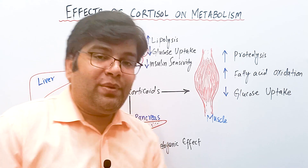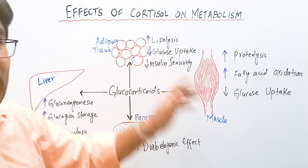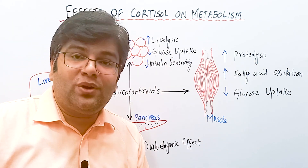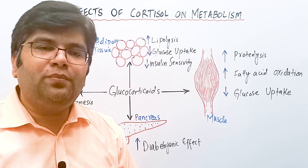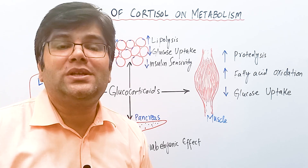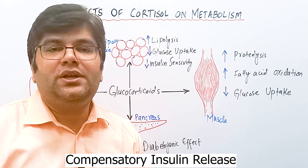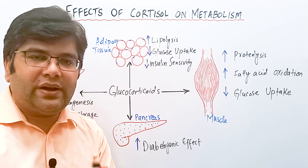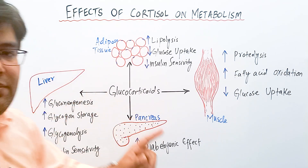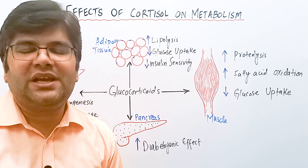When hyperglycemia occurs due to gluconeogenesis and decreased peripheral glucose uptake, this increases the release of insulin — just like glucagon does. Both cortisol and glucagon can increase insulin release because they cause hyperglycemia, and this is called compensatory insulin release. The extra glucose is then converted into glycogen and stored in the liver and kidneys, via increased activity of glycogen synthetase.